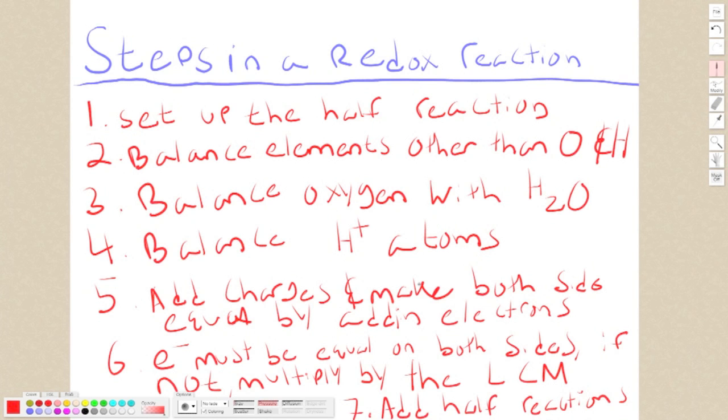Okay, now we're going to go over each individual step in a redox reaction. Step one is to set up the half reaction. If you don't know what a half reaction is yet, don't worry about it. We'll go over an example problem later in the video and you'll learn exactly how to do it.